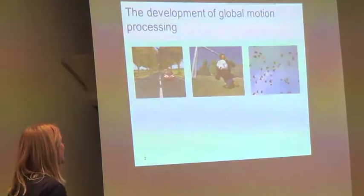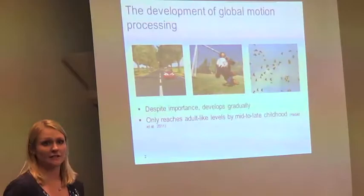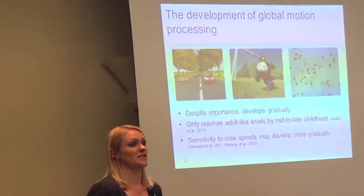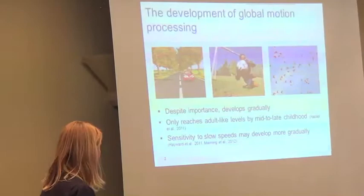But despite this, global motion processing actually follows quite a long, protracted development and only reaches adult-like levels around mid to late childhood. While people are generally more sensitive to motion information when it's moving fast, it also seems that this might develop differently too, so there might be an even more gradual development for slow speeds.